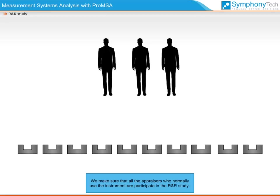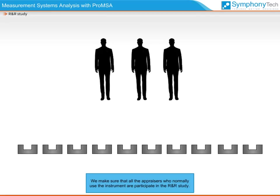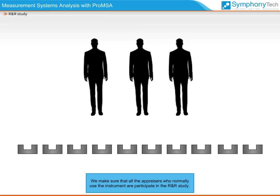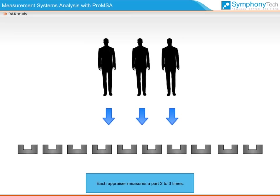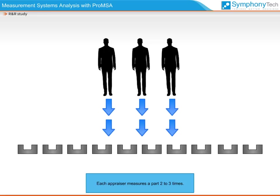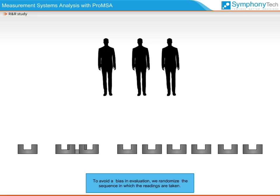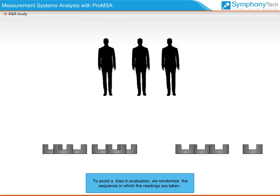We make sure that all the appraisers who normally use the instrument participate in the R&R study. Each appraiser measures a part two to three times. To avoid bias in evaluation, we randomize the sequence in which the readings are taken.